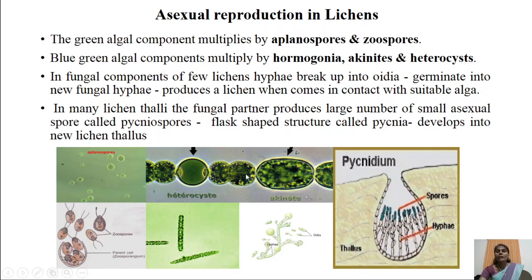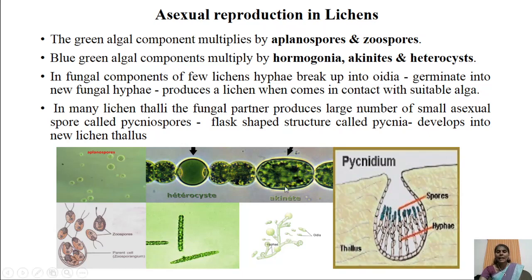Akinetes are thick-walled resting spores observed in the blue-green algal component of lichen thalli. They are provided with reserved food materials and form during unfavourable environmental conditions. When favourable conditions return, these akinetes break open their thick wall, and the contents, by means of cell division, develop a filament of algal cells.